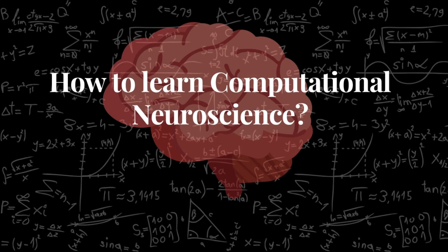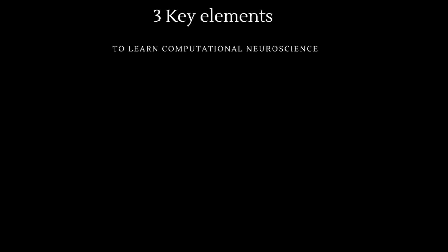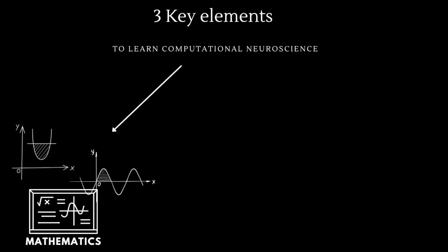In the last part of the video we would like to leave you with the prerequisites one needs to have a working knowledge of in order to comprehend and understand the research undertaken in the field of computational neuroscience. We identify that there are three key elements or three key areas one needs to have good working knowledge in. The first key area is mathematics,